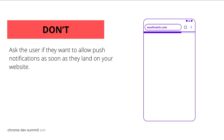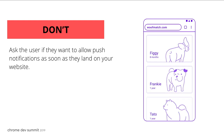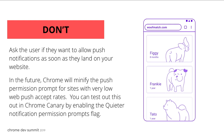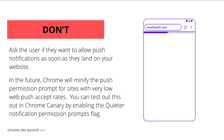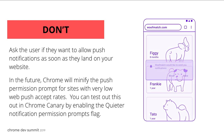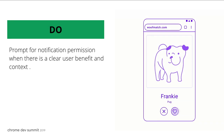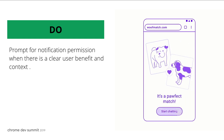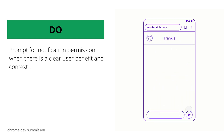Let's do this by example. Don't ask the user if they want to allow push notifications as soon as they land on your website. In the future, Chrome will minify the push permission prompt for sites with very low push accept rates — you can already test this feature in Chrome Canary by enabling the quieter notification permission prompt flag. Please do prompt for notification permission when there is a clear benefit and context to the user.